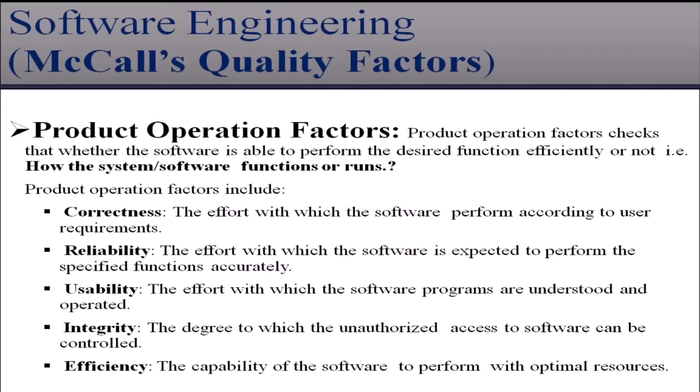Correctness is the effort with which the software performs according to the user requirements. Reliability is the effort with which the software is expected to perform the specified functions accurately. Integrity is the degree to which unauthorized access to the software can be controlled. Efficiency is the capability of the software to perform with optimal resources.